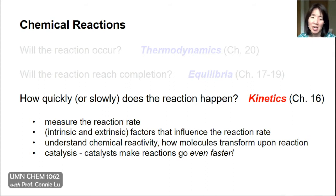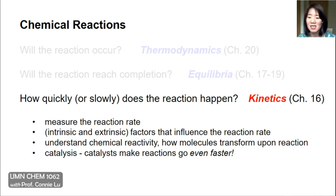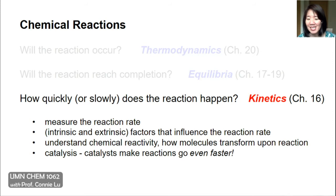The last question — how quickly does the reaction happen — is the topic of our current chapter: kinetics. Within kinetics we're going to have a few different subtopics. We'll begin talking about what a reaction rate is, which is the speed of the reaction and how to measure it. We'll go over both intrinsic and extrinsic factors that influence the reaction rate, and hopefully by studying kinetics we can understand something about how the reaction occurs.